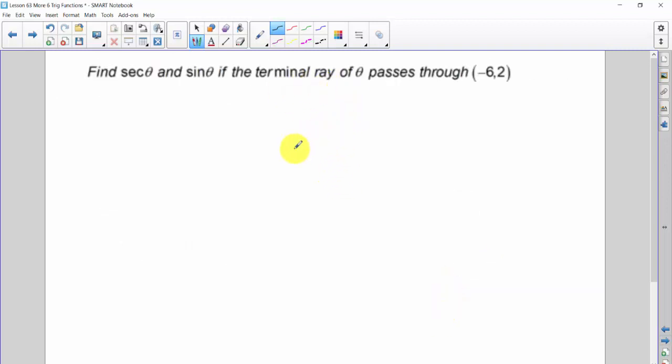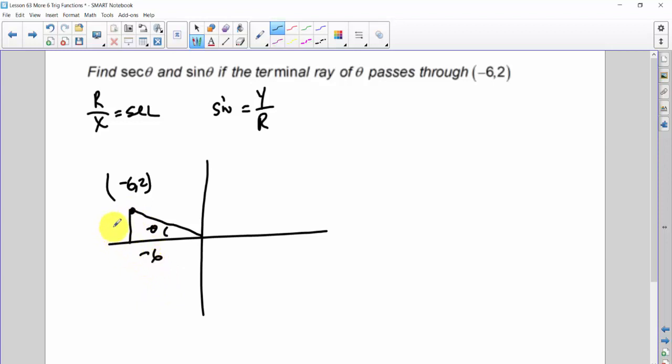Same idea, asked a little bit different. Terminal ray passes through this point, find the secant and the sine. Secant is, once again, r over x in this case. And the sine is y over r. So we need r in both of these cases. Draw myself my set of axes. Negative 6, positive 2, somewhere around here. Draw that angle and its reference. There's my triangle.